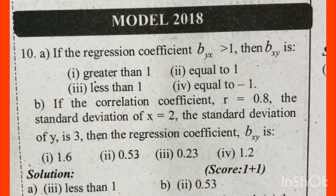If the regression coefficient byx is greater than 1, then bxy is dash. That is why we have two regression coefficients. byx is greater than 1.